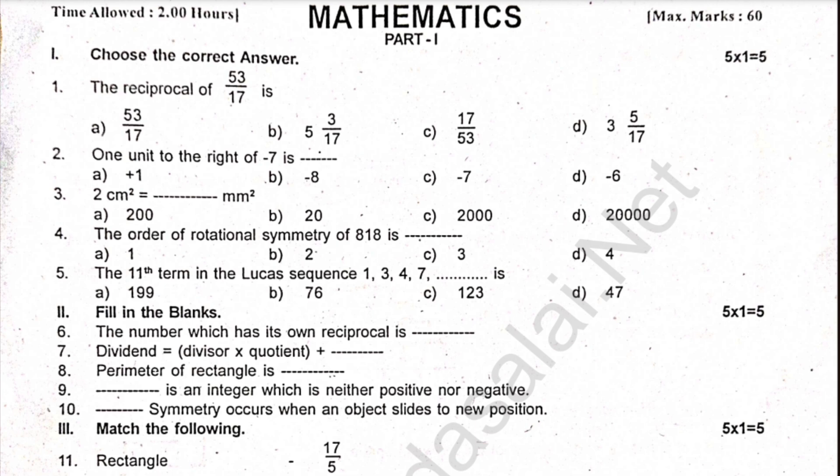Welcome to the video. In this question paper, choose the correct answer. The reciprocal of 53 by 17. 1 unit to the right of minus 7. 2 centimeter square is equal to dash millimeter square.